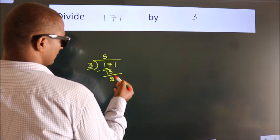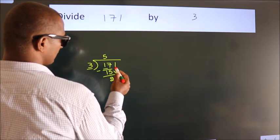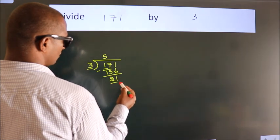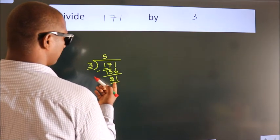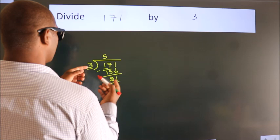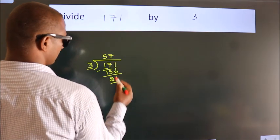After this bring down the beside number. So 1 down, making 21. When do we get 21 in the 3 table? 3 sevens is 21.